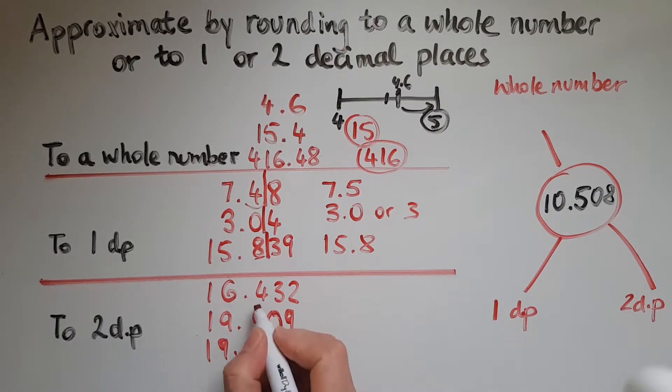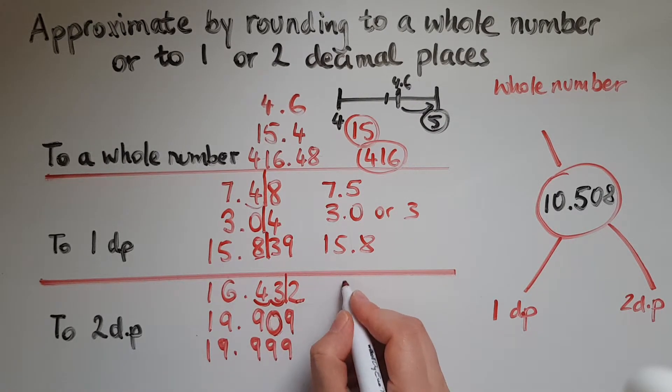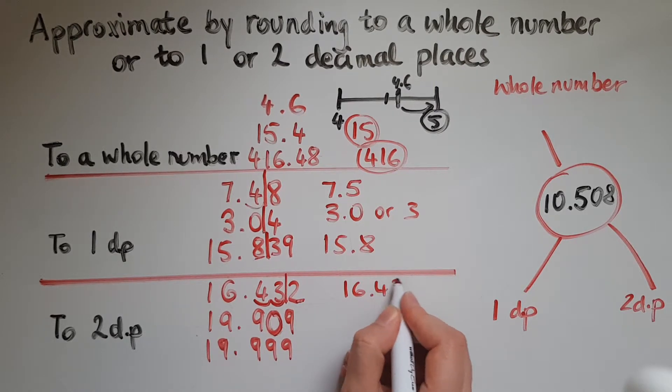Now to two decimal places. So we're cutting off here. So do I keep this as 16.43 or go to 16.44? Now the 2 next to it, next to the 3, tells me that we've got to round down. So we're going to keep this as 16.43.